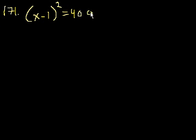Problem 171. If x minus 1 squared is equal to 400, which of the following could be the value of x minus 5?